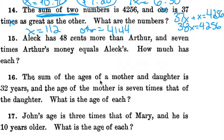Number 15: Alec has 48 cents more than Arthur, and 7 times Arthur's money equals Alec. How much has each? The least amount of information we know about is Arthur, we're going to make him x. And Alec is 7x. More than is a keyword for subtraction. So we know we're going to take the bigger number, 7x, take away the smaller number, and we're left with 48 cents. So 7x minus x, we're left with 6x equals 48.